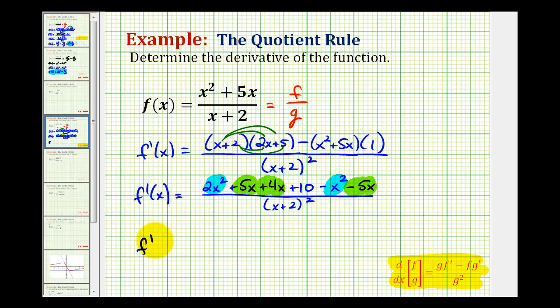So f prime of x is going to be equal to, again we'll leave the denominator in factored form so we'll have the quantity x plus two squared. We'll have one x squared or just x squared and then we'll have nine x minus five x, that's four x plus ten.